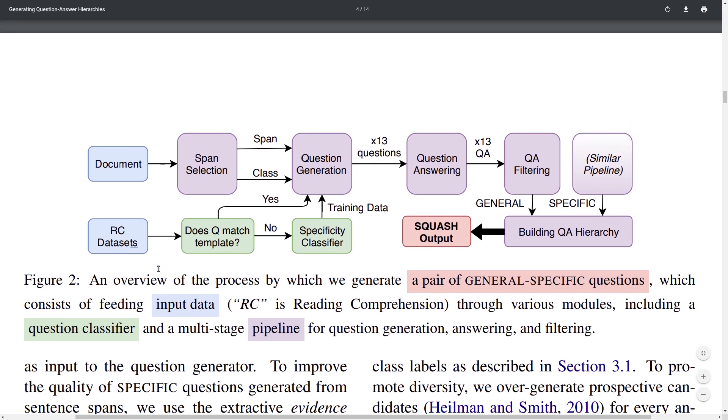So they take those reading comprehension datasets and they first split them into general and specific categories. And they have some special rules to do this as well as a specificity classifier which they train. This allows them to produce training data for their question generation models.